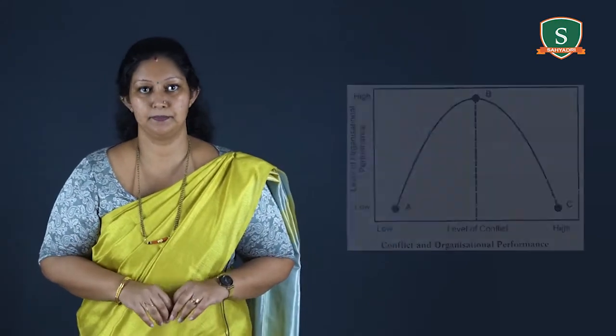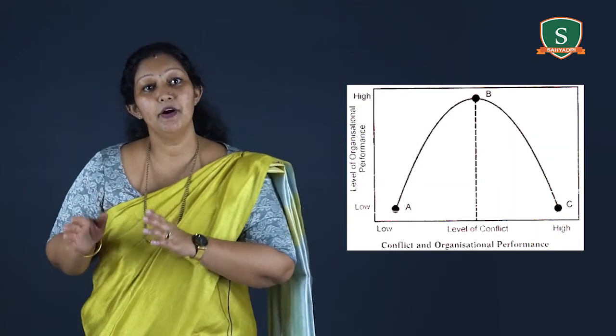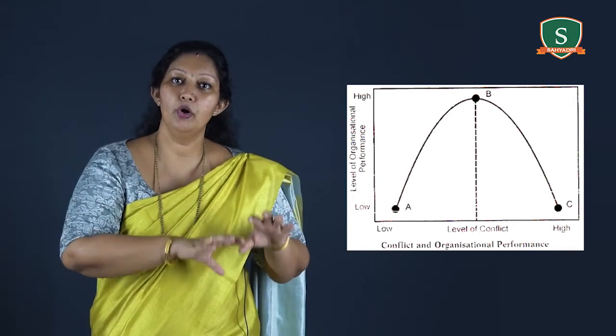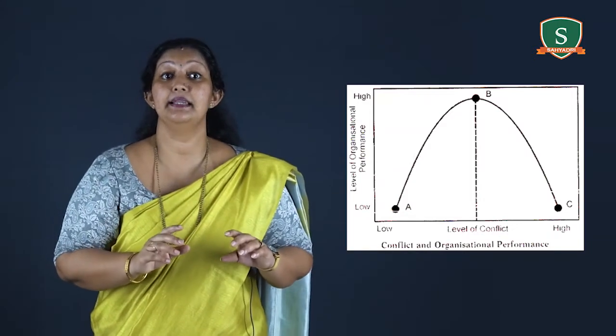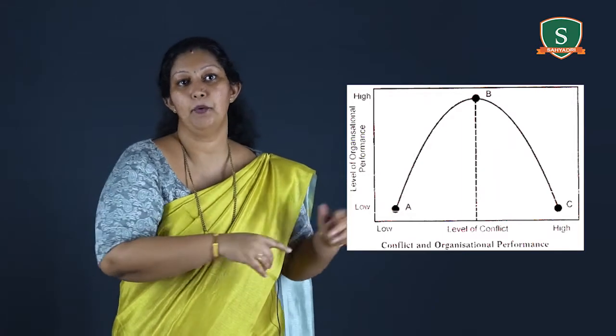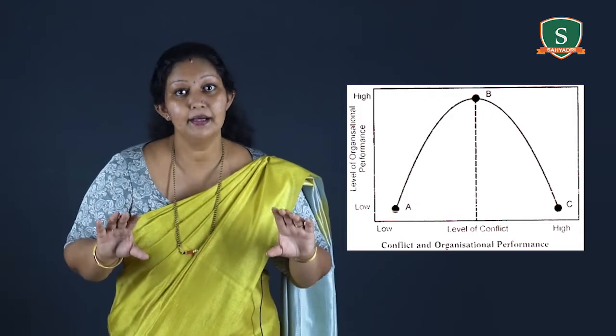Conflict can arise between line and staff, or between different functional heads. For example, a conflict might be between a production manager and a sales manager at different levels and in different degrees. From the graph of the relationship between conflict and performance, we can identify that organizational performance is low when conflict is at two extremes — high, at point C, or low, at point A — and organizational performance is high at moderate levels of conflict.